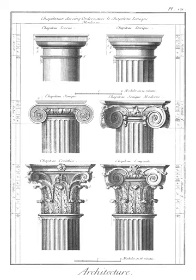Bramante used the composite order in the second order of the Cloister of Santa Maria della Pace, Rome; for the first order, the Ionic order was used. Francesco Borromini developed the composite order in San Carlo alle Quattro Fontane, Rome. The interior of the church has 16 composite columns. The load-bearing columns placed underneath the arches have inverted volutes. This choice was highly criticized at the time, thinking it was a lack of knowledge of the Vitruvian orders that led him to his decision.